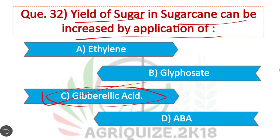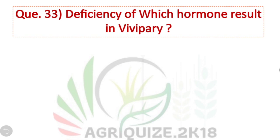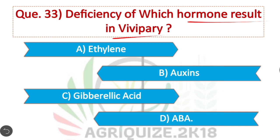Question 33: Deficiency of which hormone results in vivipary? Abscisic acid. Option D is correct. The deficiency of abscisic acid can cause vivipary in plants.